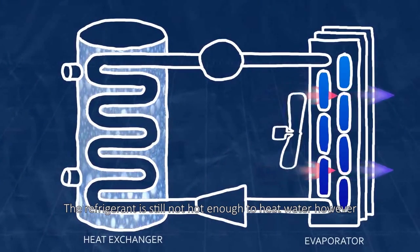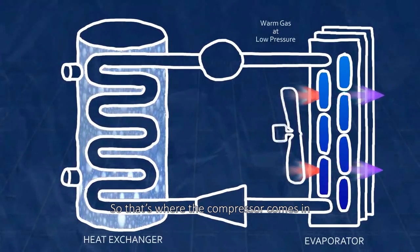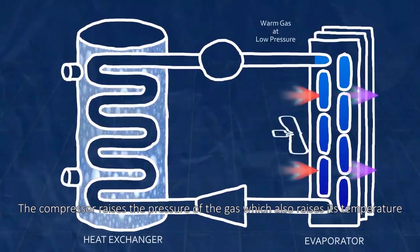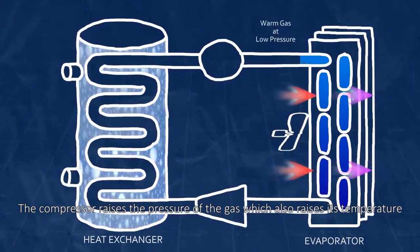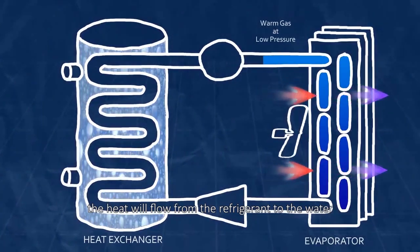The refrigerant is still not hot enough to heat water, however, so that's where the compressor comes in. The compressor raises the pressure of the gas, which also raises its temperature. Once it's hot enough, the heat will flow from the refrigerant to the water.